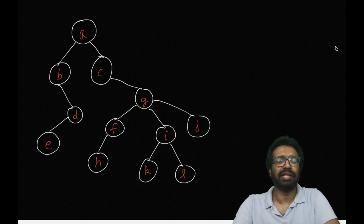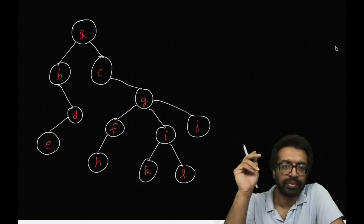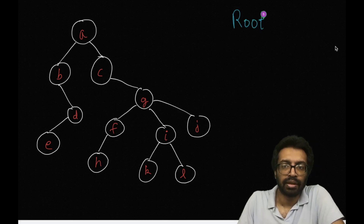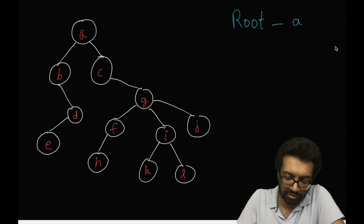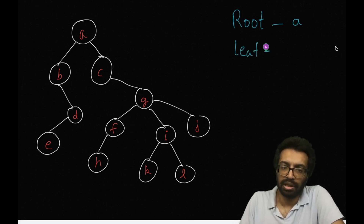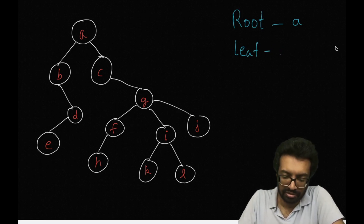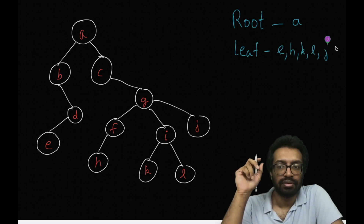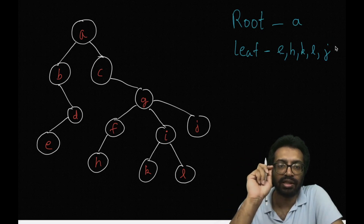Which are the leaves of this tree? The leaf nodes are E, H, K, L, and J. These are the leaves of the tree.